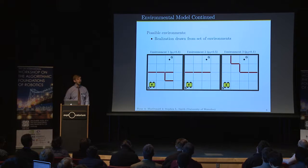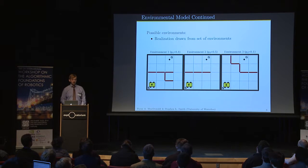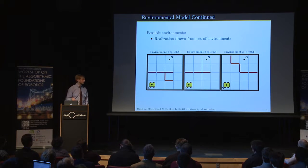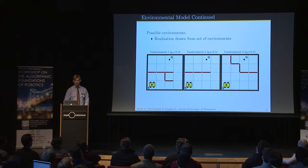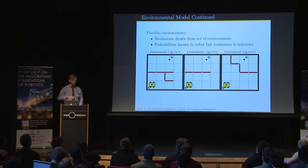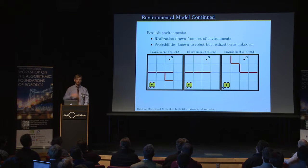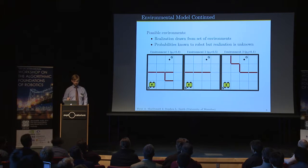There's a set of possible environments, and one particular environment is drawn at random — that is the realization of the particular environment the robot is functioning in. The robot knows all of the environments and the probability distribution, but doesn't know the particular random draw.